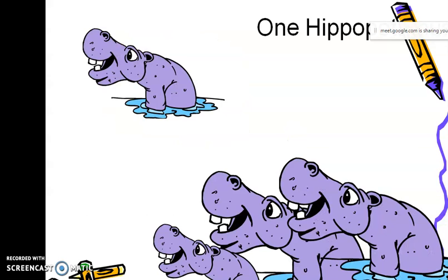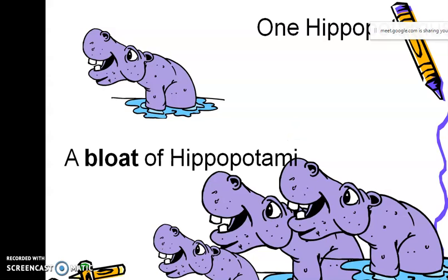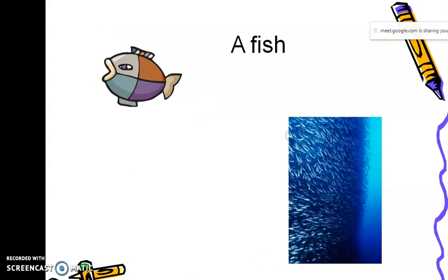Hippopotamus is one. If you have many hippopotamus, it is bloat. B-L-O-A-T, bloat of hippopotamus. Fish is one, and when you have many fish, you can call them school, school of fish.